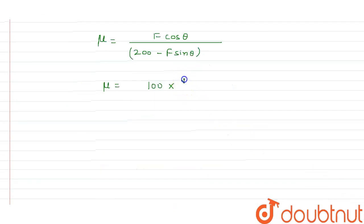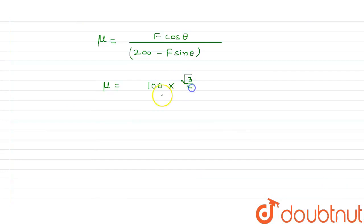So I write F cos theta. We know that the value of cos theta is nothing but equals to root 3 by 2. Simply I write it here directly: this will be 200 minus F is given to me 100, sin theta is my 1 by 2.